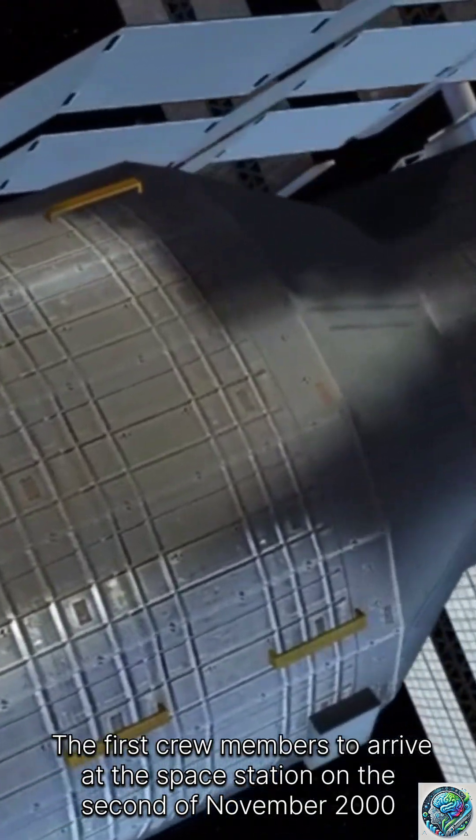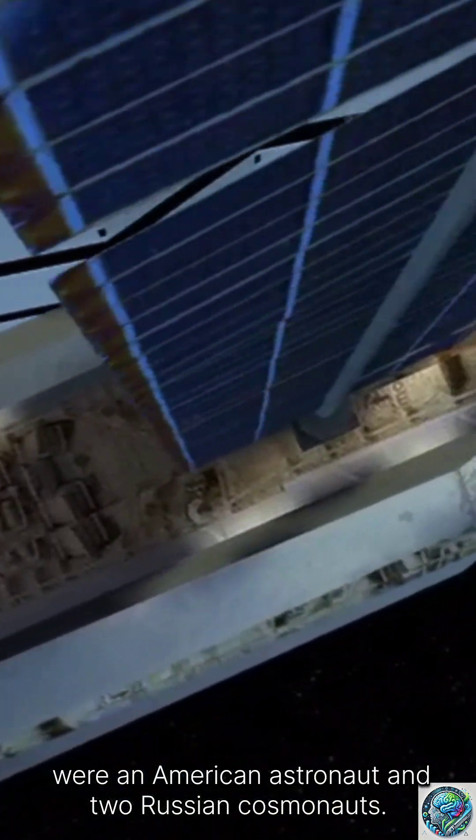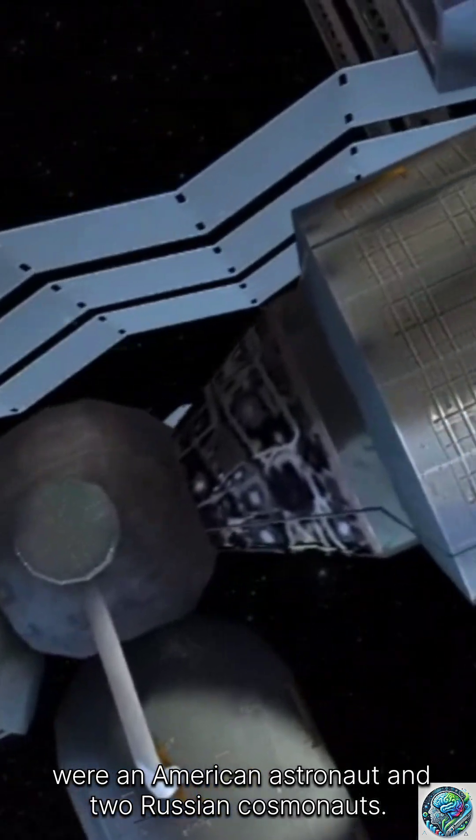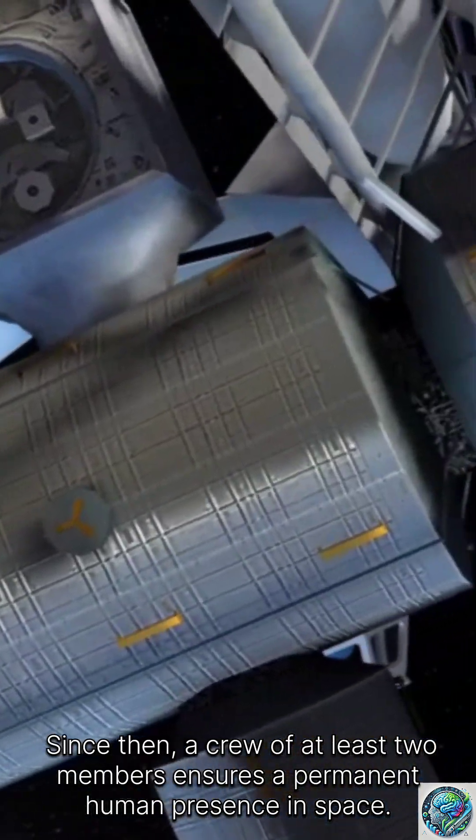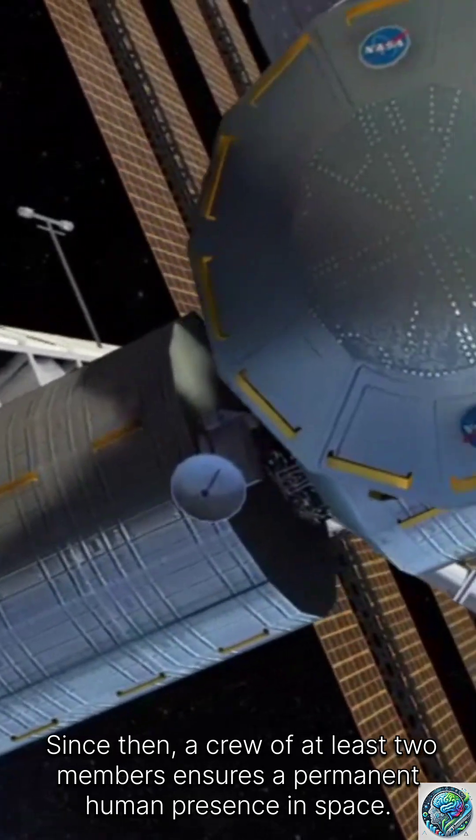The first crew members to arrive at the space station on the 2nd of November 2000 were an American astronaut and two Russian cosmonauts. Since then, a crew of at least two members ensures a permanent human presence in space.